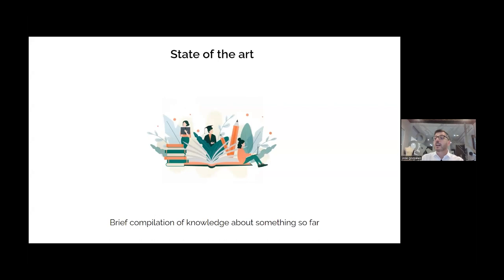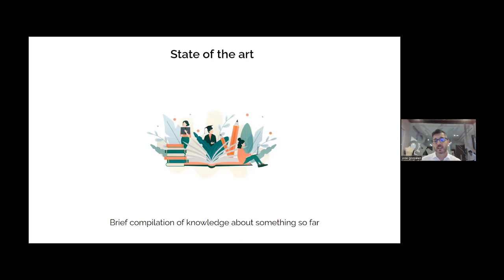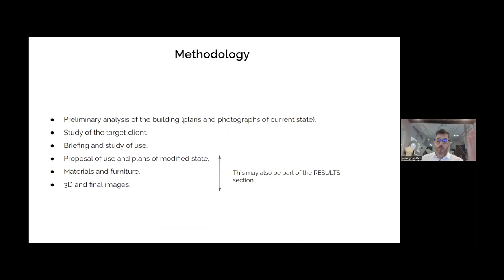The state of the art is a brief but complete compilation of knowledge about something. What I showed you with the references — that is the state of the art. But it's not only about giving seven references; it's about reading them, analyzing them, and writing about them. It can be one to two A4 pages. You give some paragraphs explaining what you can find and what the results of those references were. You read the references, extract the most important parts, and write them in your own words.